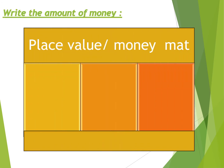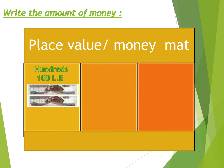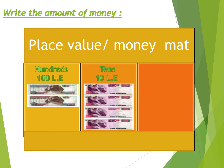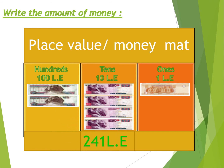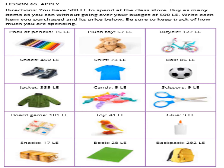Write the amount of money using the place value money mat. In the hundreds place we found two hundred. In the tens place we find one, two, three, four — four tens. In the ones place we get just one pound. The total will be 241 pounds. Great job!